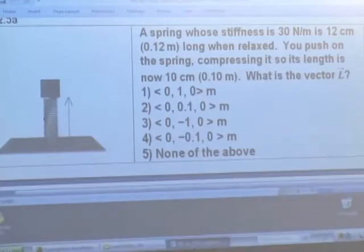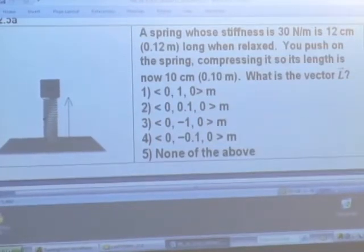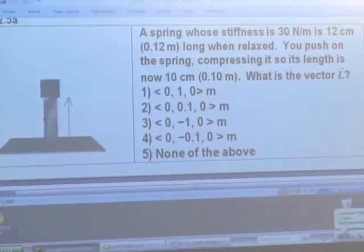Remember, L starts at the location that the spring is attached to its support, and it goes to the movable end of the spring. So what's L in this case? Starts at the place it's attached to its support, goes to the movable end.